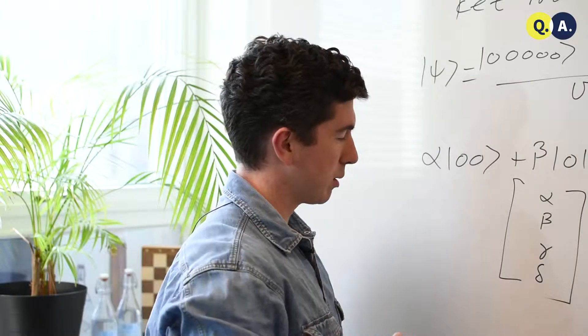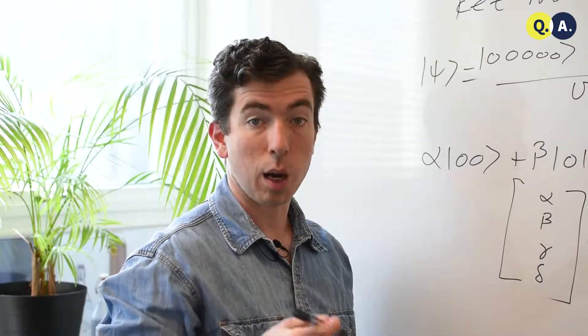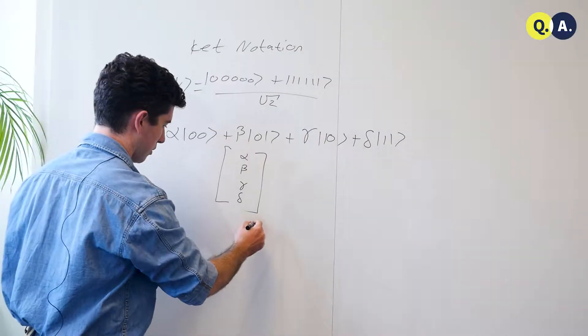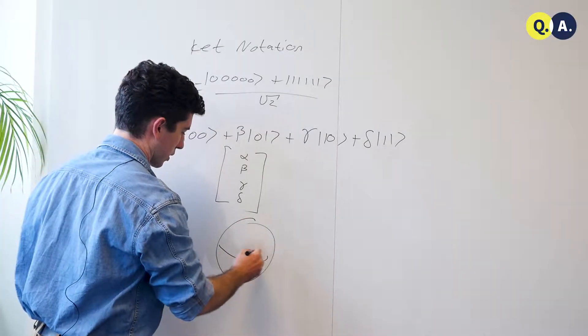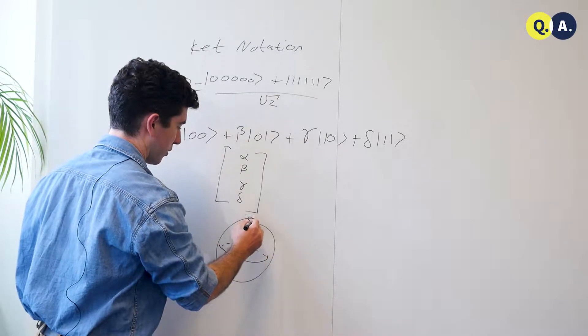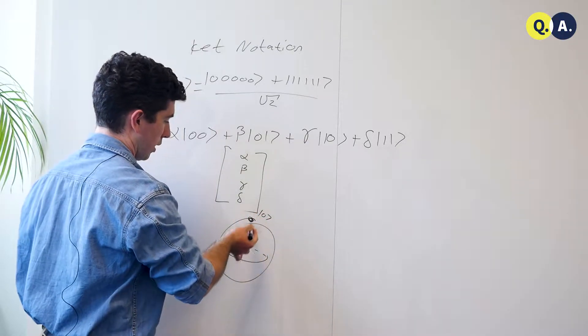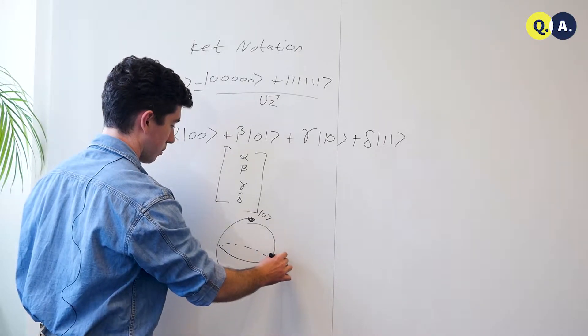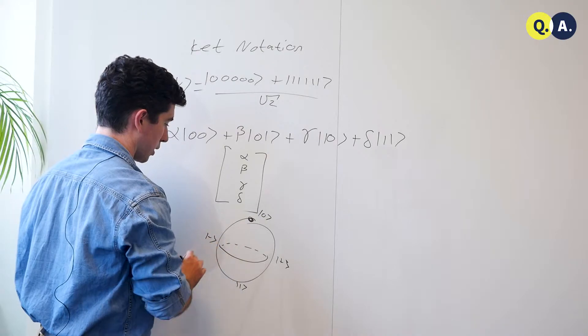And at some other times, especially if you're considering operations, transformations on the set of states, it can be beneficial to consider the Bloch sphere, where you have the reference state zero, some other states one, plus and minus like so.